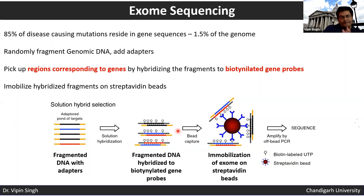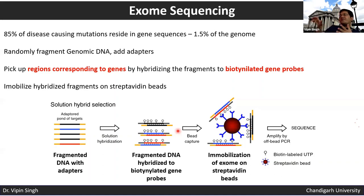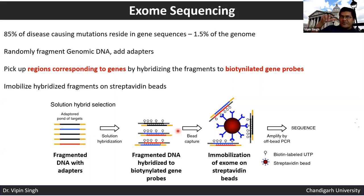Exome sequencing: the cost of whole-genome sequencing has come down to around $1,000 — roughly 70,000 rupees — but it is still prohibitive. Since most disease-causing mutations are within protein-coding genes, which are only 1.5% of the entire genome, and 85% of disease-causing mutations lie in protein-coding regions, we can sequence just those regions, dramatically reducing cost while retaining most of the disease-relevant information.